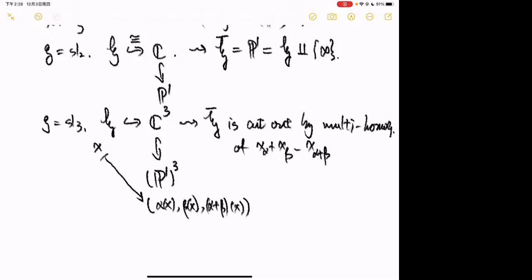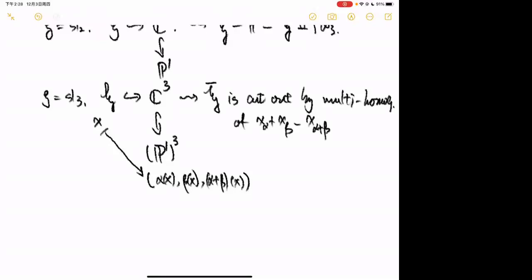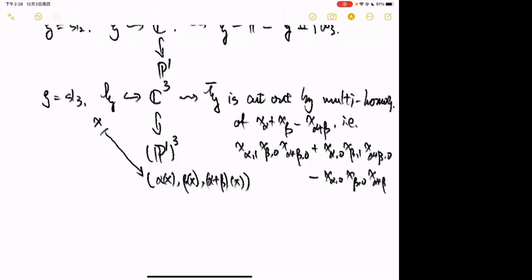By multi-homogenization I mean: X_{α,1}·X_{β,0}·X_{α+β,0} + X_{α,0}·X_{β,1}·X_{α+β,0} − X_{α,0}·X_{β,0}·X_{α+β,1} = 0. These are homogeneous coordinates on (P¹)³.